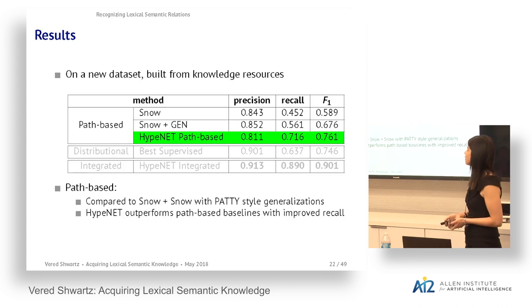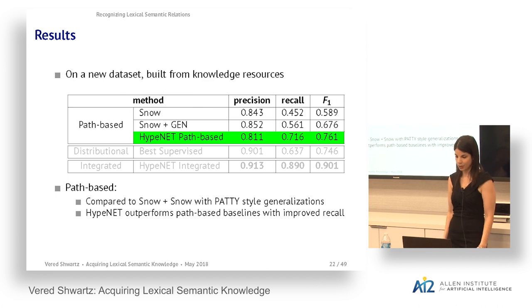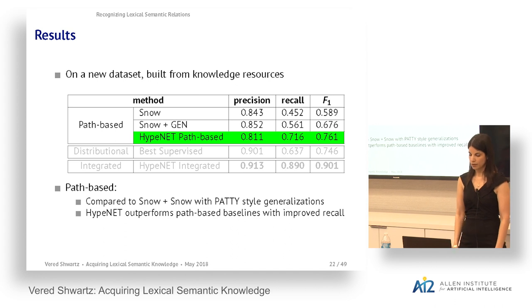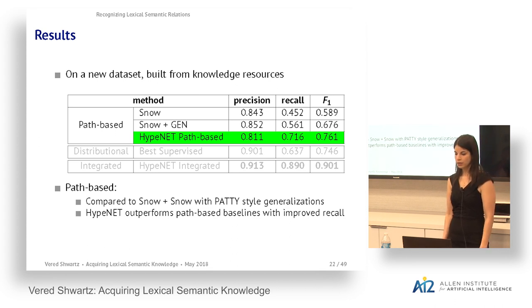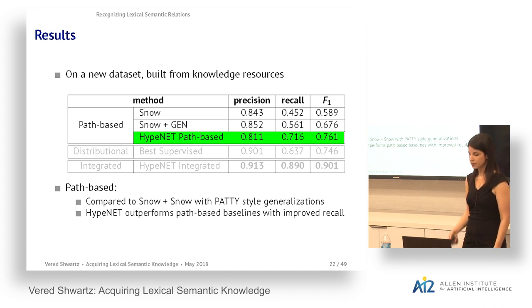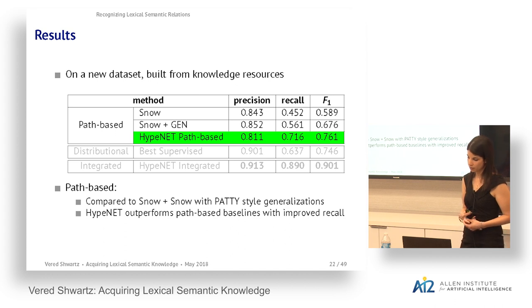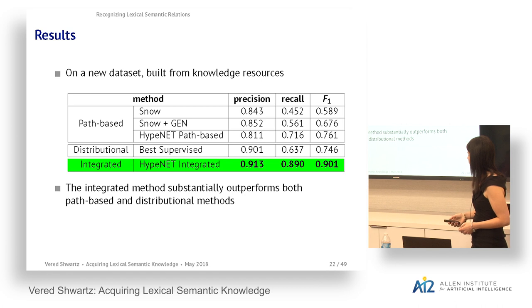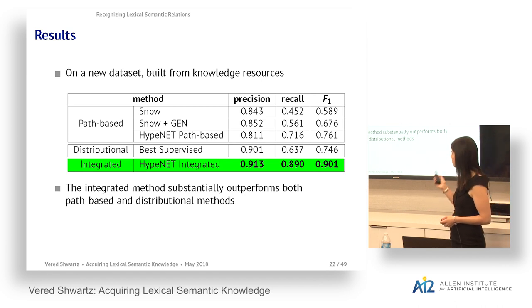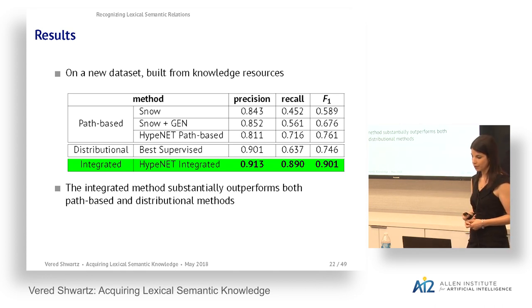We trained and evaluated the method on a new dataset constructed from knowledge resources, as available datasets were too small. The path-based variant of our network outperformed the path-based baselines — Snow et al.'s logistic regression and our re-implementation with generalized paths — by a large improvement in recall. The integrated model substantially outperforms the individual path-based and distributional methods, showing that this information is indeed complementary.